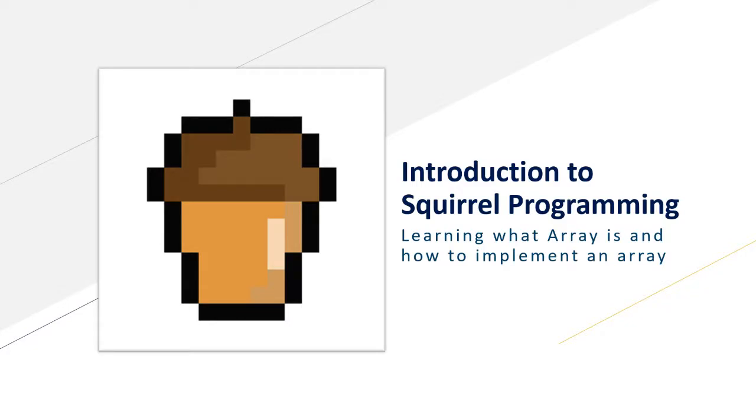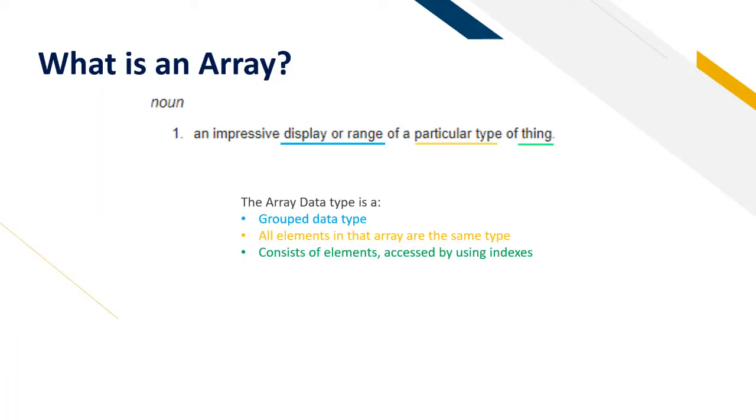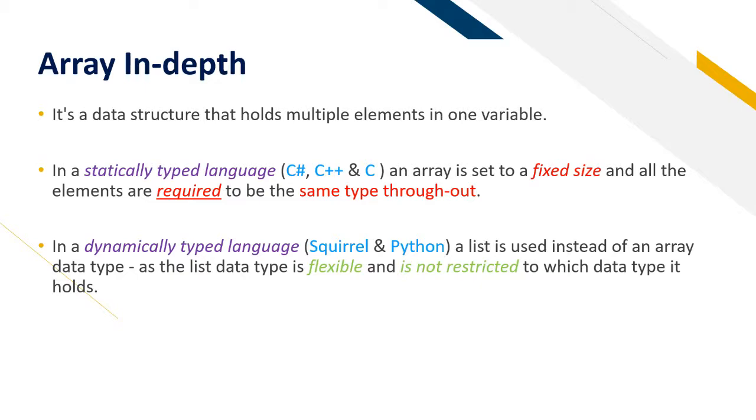Welcome back to the introduction to Squirrel Programming. Today we will learn what an array is and how to implement an array in Squirrel. An array is an impressive display or range of a particular type of thing. The array data type is a grouped data type where all elements in that array are the same type and it consists of elements accessed by using indexes. An array is a data structure that holds multiple elements in one variable.